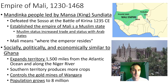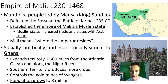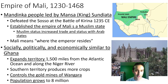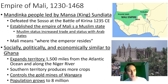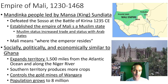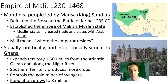After Ghana, we get the Kingdom of Mali. The Mandinka people were led by Mansa, or King Sundiata, who defeated the Soso at the Battle of Kirina in 1235 and established the Empire of Mali as a Muslim state. While there had been Muslim influence in Ghana, Mali was explicitly a Muslim empire. The Muslim status was chosen partly out of genuine religious desire, but also for opportunity — being Muslim increased trade and status with neighboring Arab states.